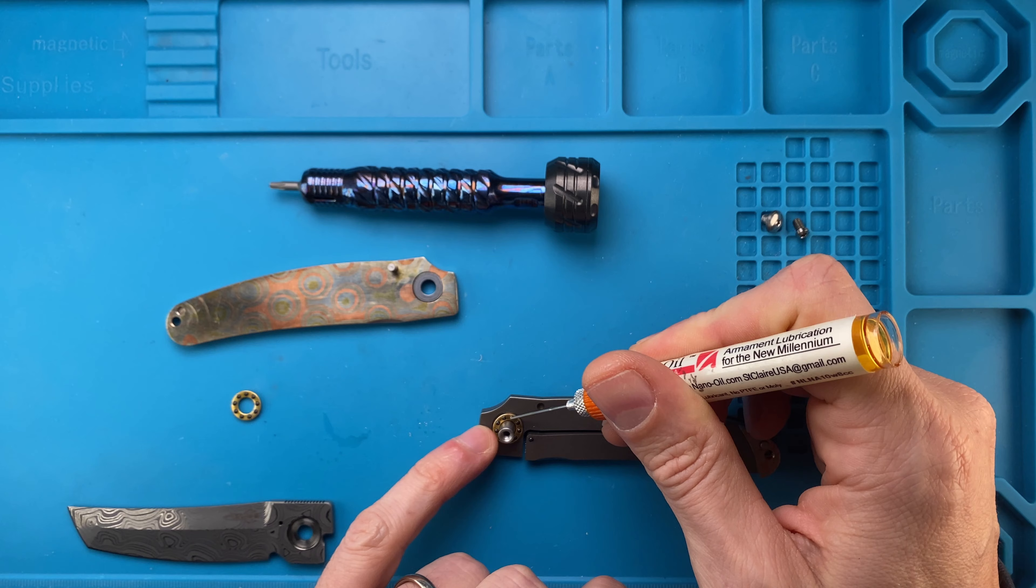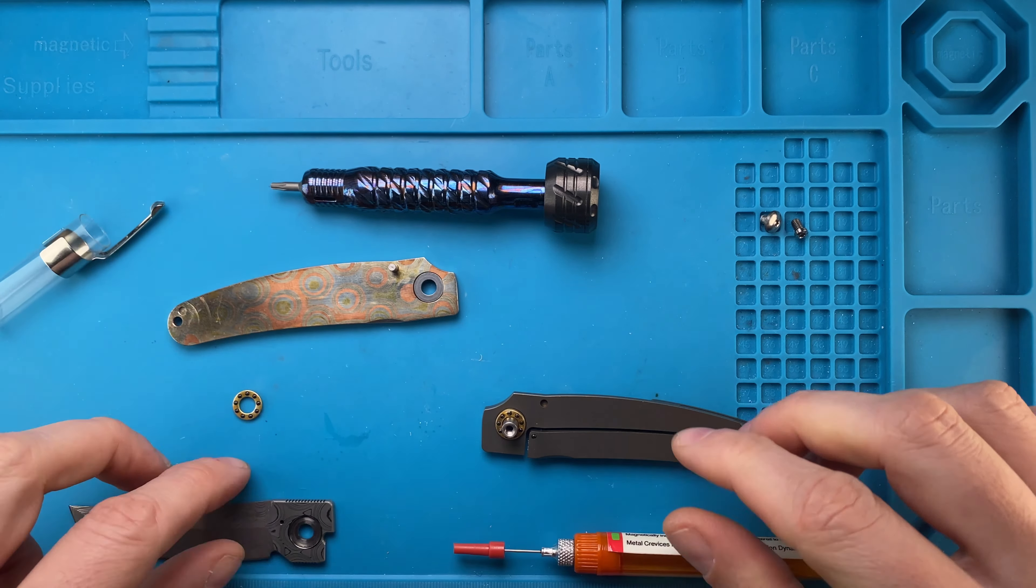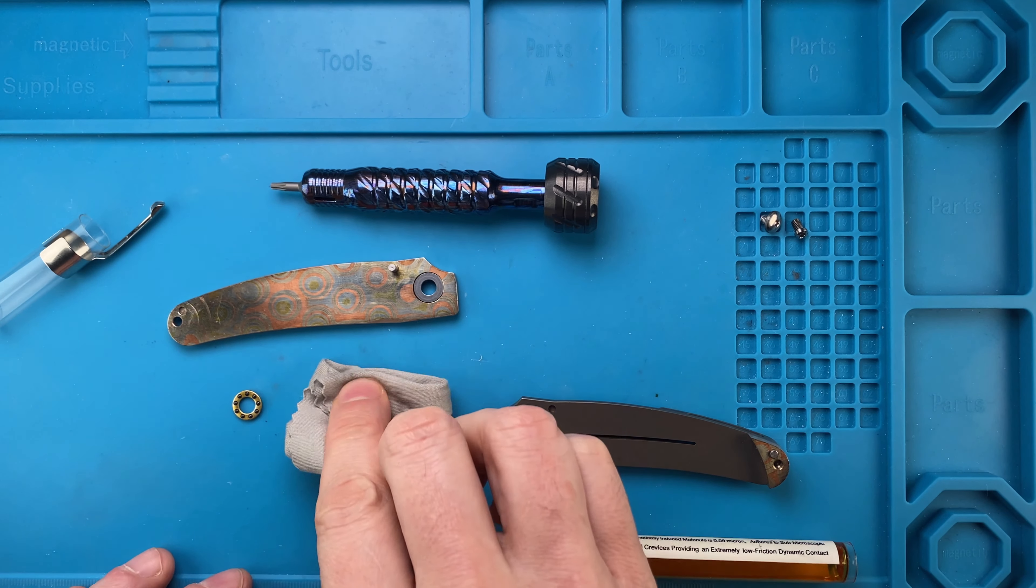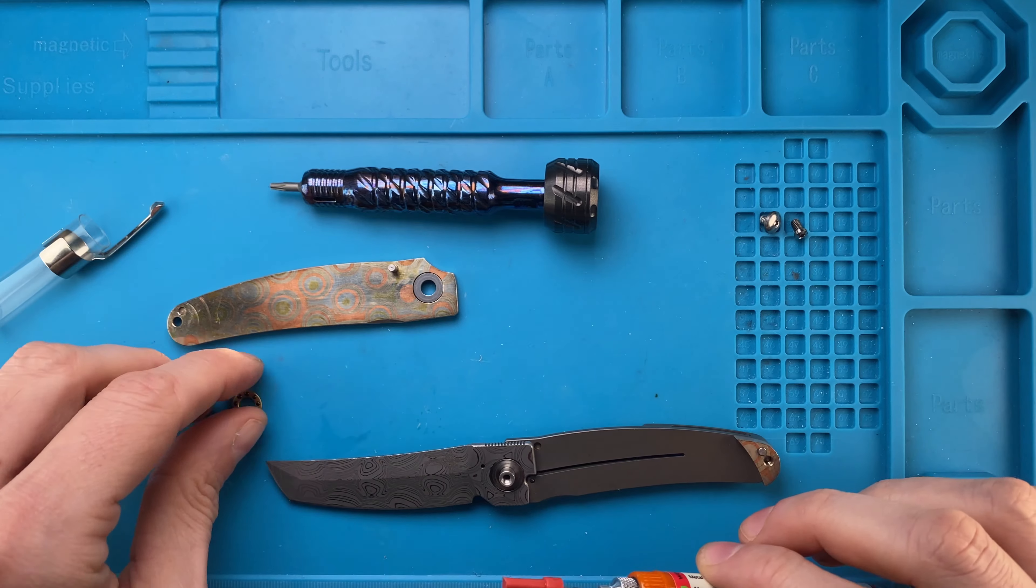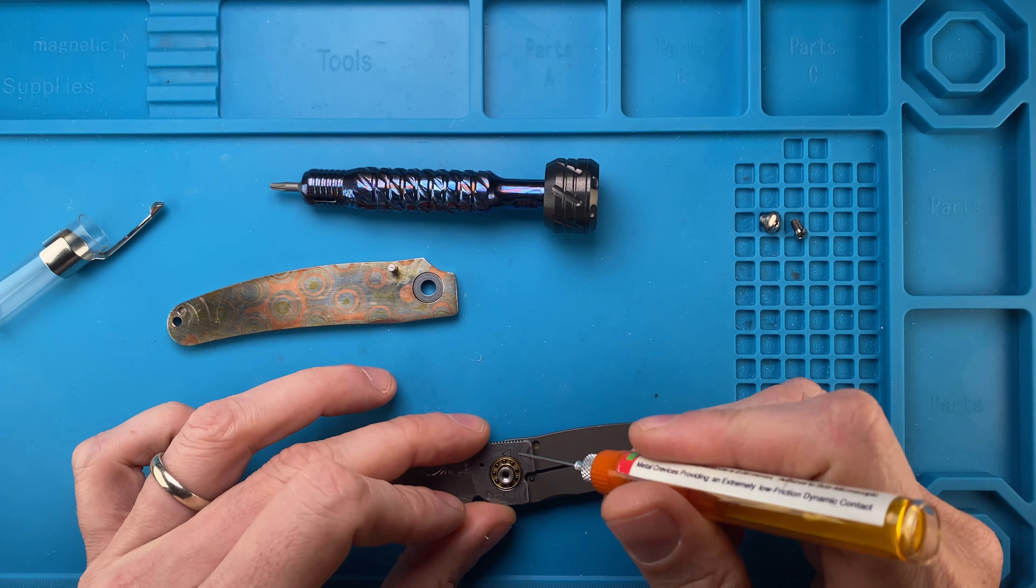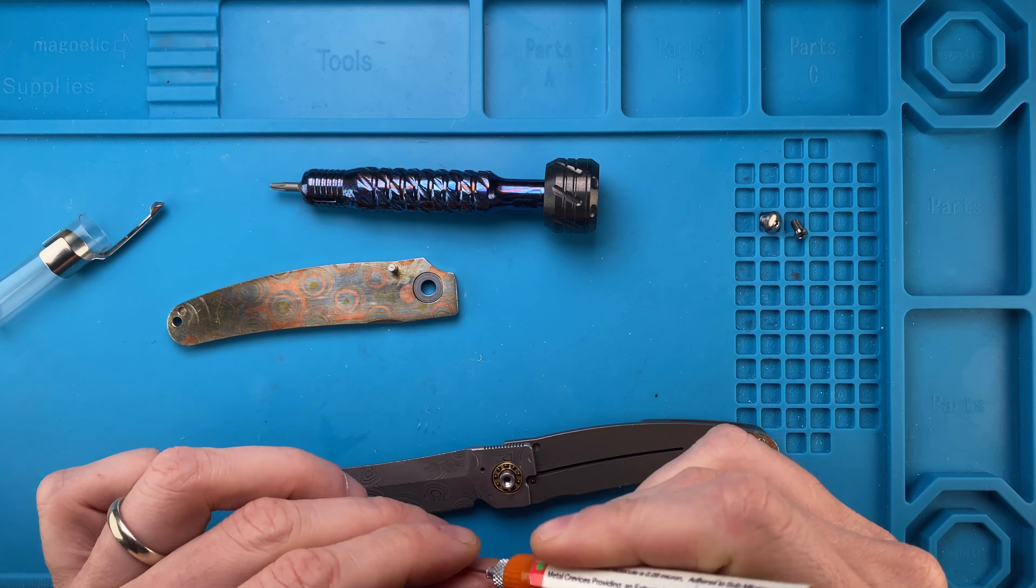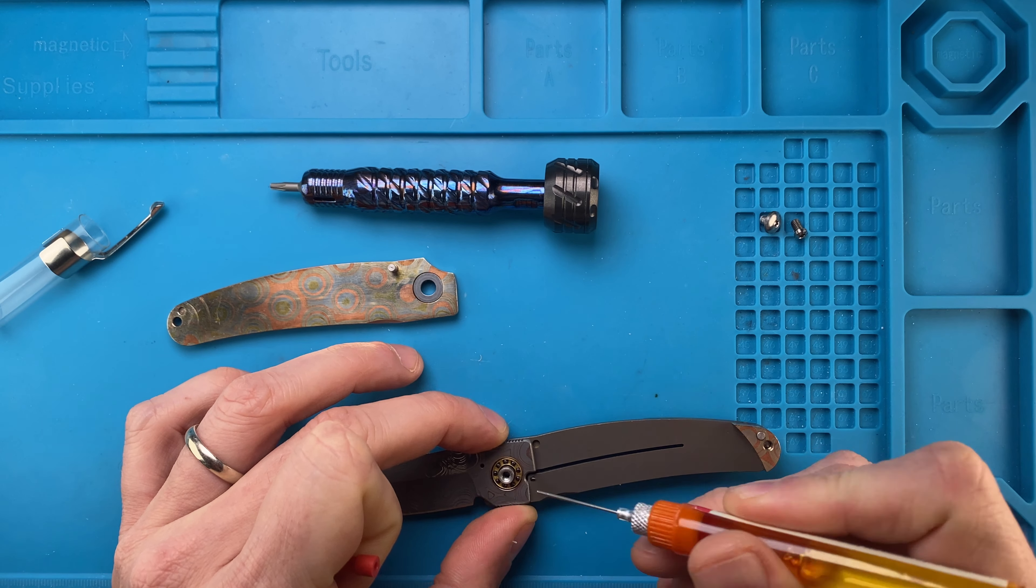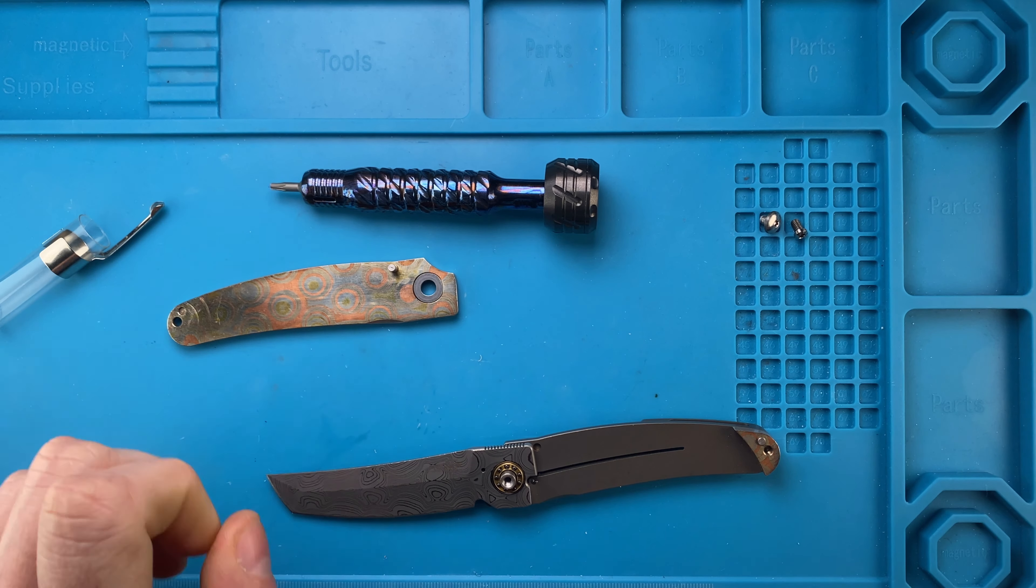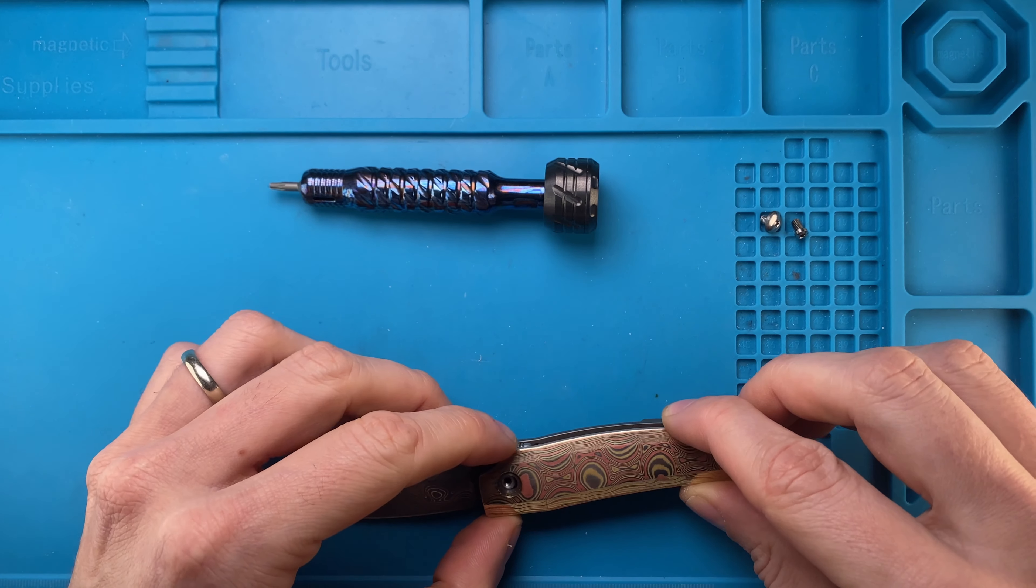I'm gonna use like three drops, one, two, and three. And the blade goes in, like so, and then the bearing goes in as well, like that. And then again, one, two, and three drops, it's plenty. I'm gonna try to use a little bit of drop on the detent ball, right over there, and let's see if we can improve a little bit the action.